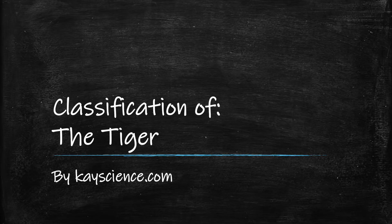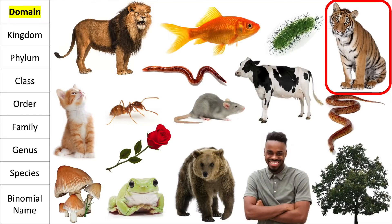Classification of the tiger by kscience.com. We're going to use the Linnaean classification system to determine the taxonomy and then the binomial name of the tiger.